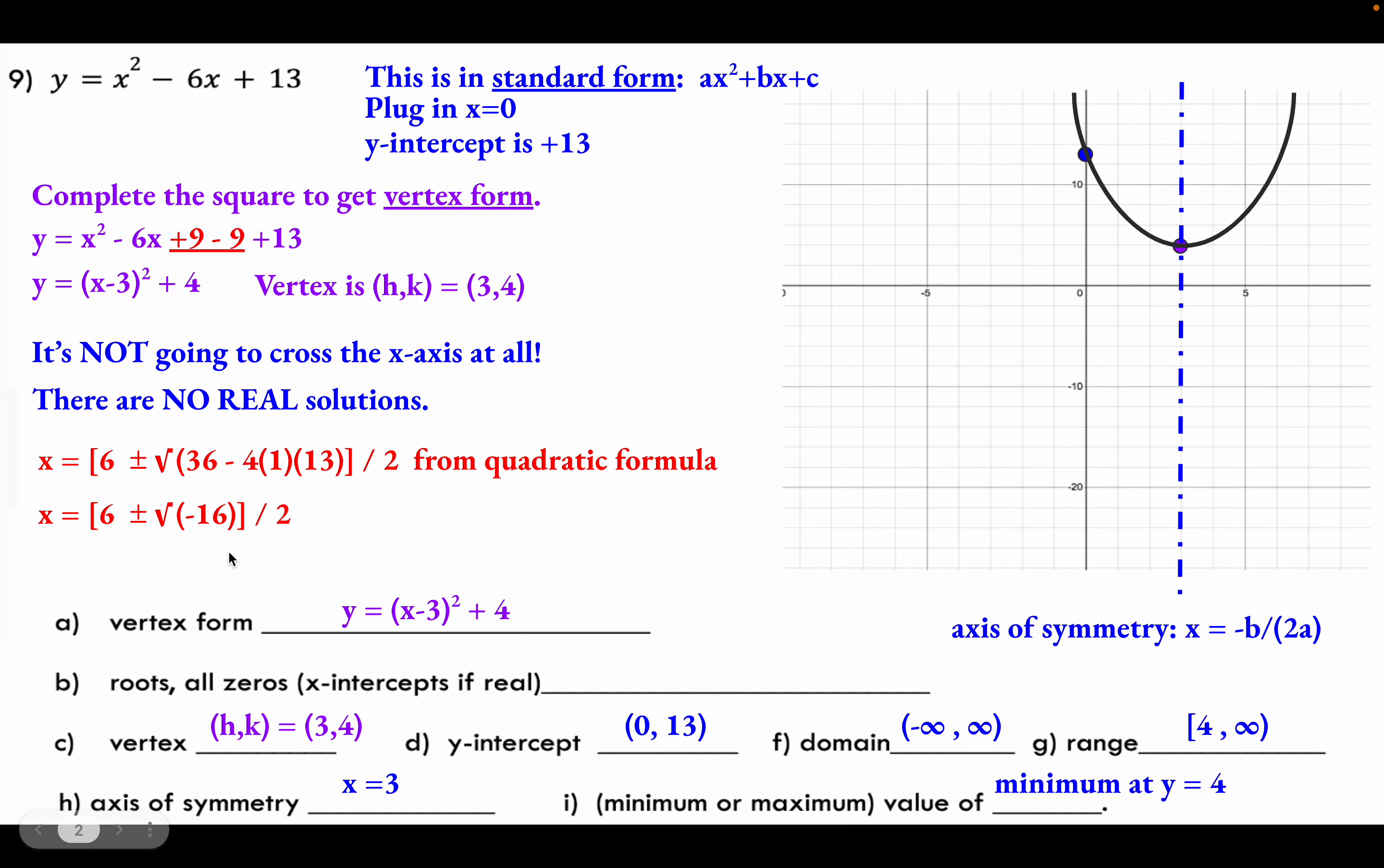Well, root negative 16 is just going to be 4i. So it's going to be 6 plus or minus 4i over 2. And then we can simplify this by dividing the numerator by 2 or both terms in the numerator. So you'll get 3 plus or minus 2i. And those are our complex number solutions or zeros of this function.